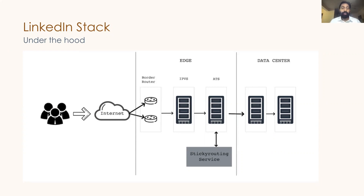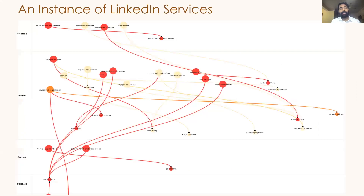From there, a service called sticky routing assigns a primary and secondary data center for each of our members. The data center part is where all of our services live. This is just one instance of a small interaction of how LinkedIn services talk to each other. You can see different tiers in this diagram — many services talk to each other in service-to-service interactions, and each service has upstreams and downstreams, with hundreds of instances, metrics, and telemetry.